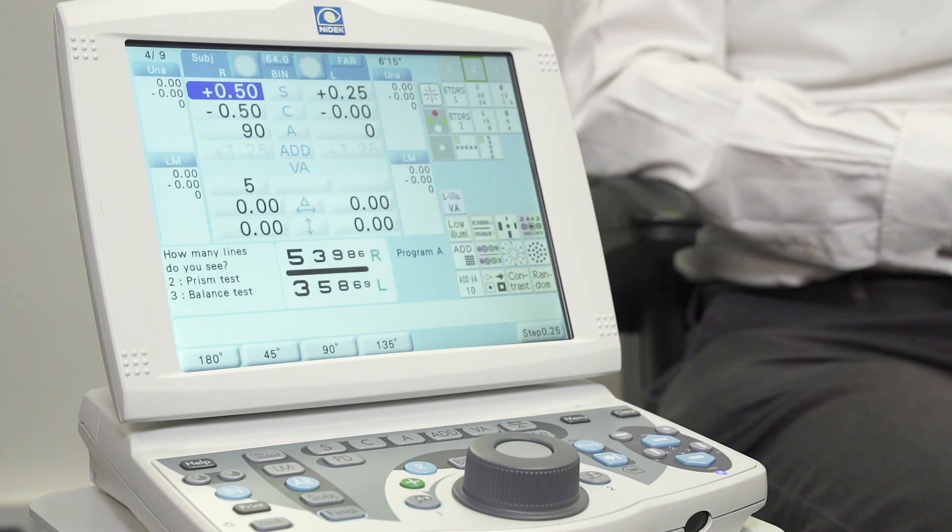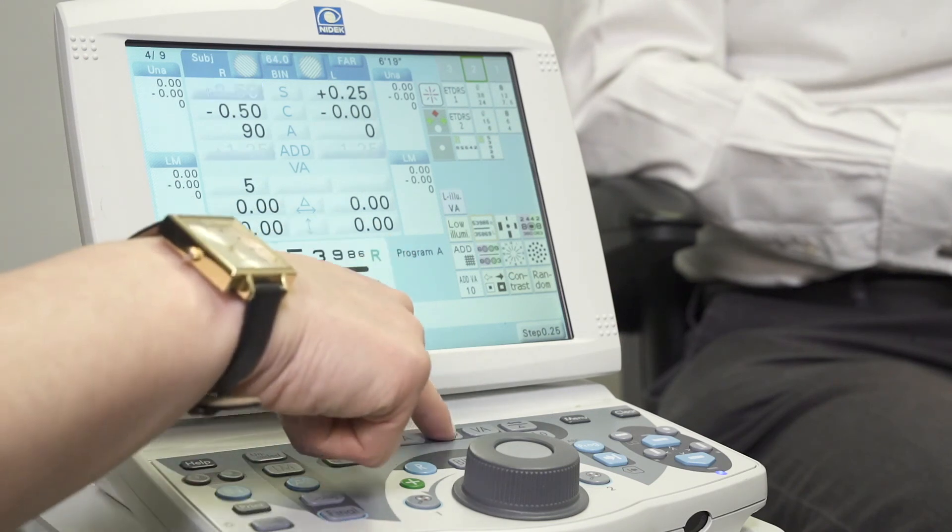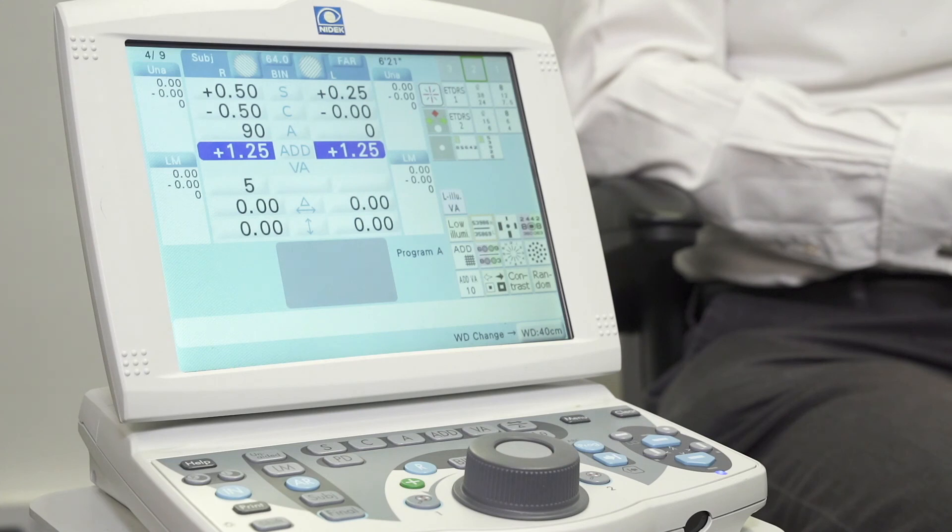Once we're happy with our distance prescription, we can move on to check our near visual acuity using our add function here and the reading rod attached to the top of the phoropter head.